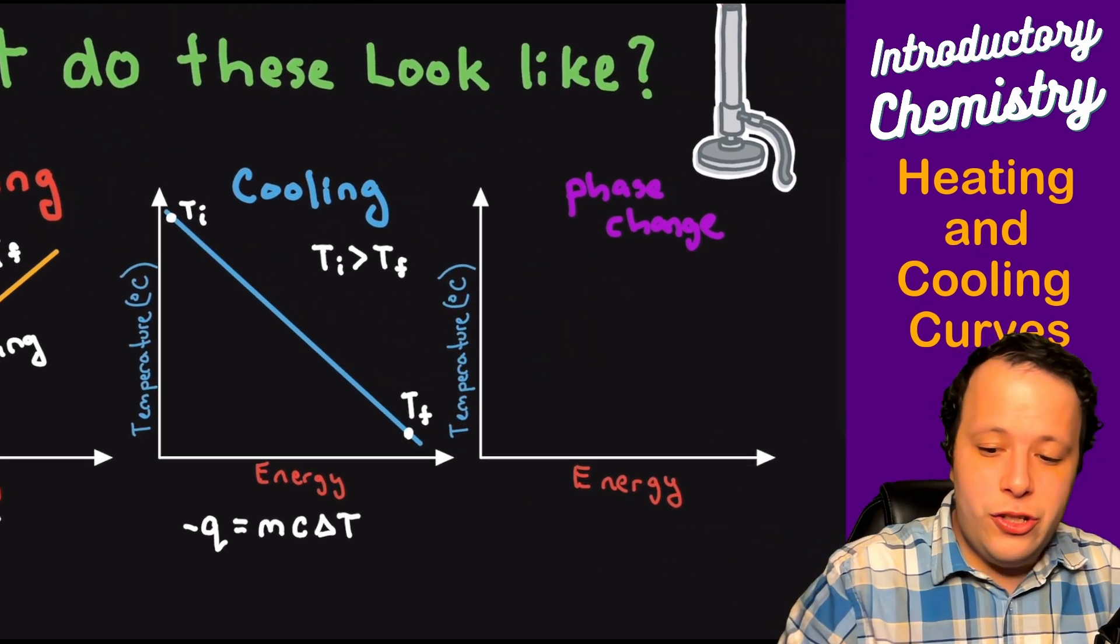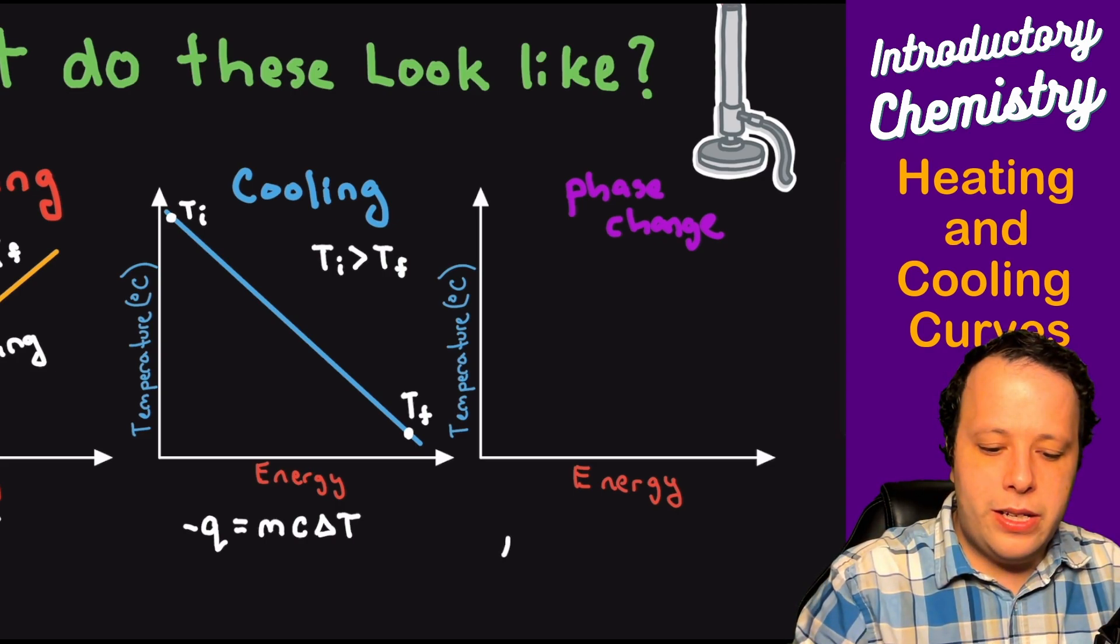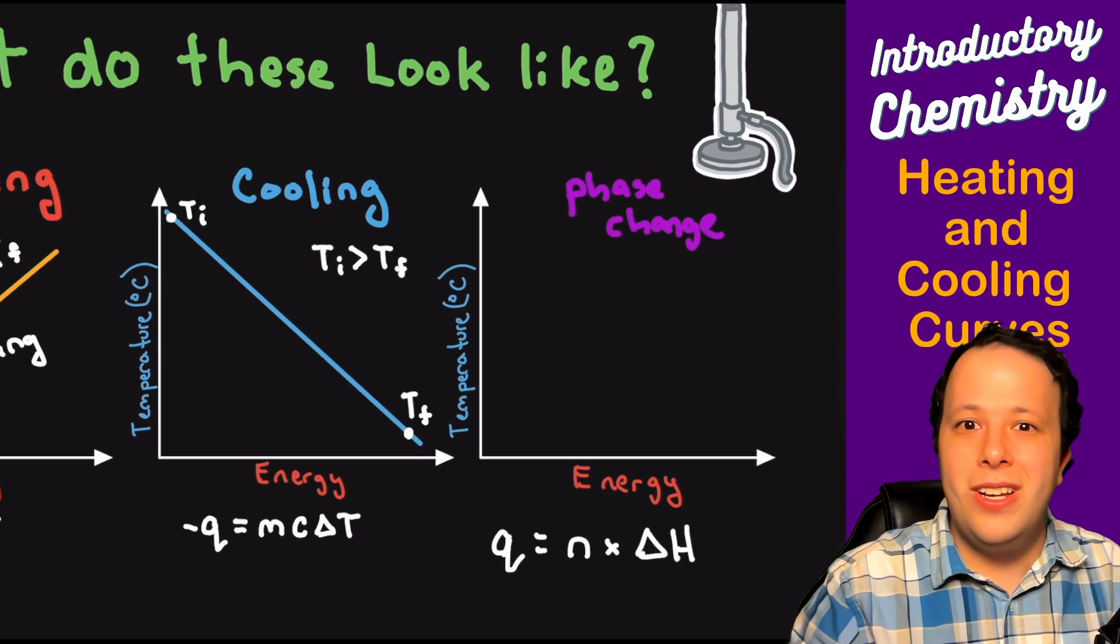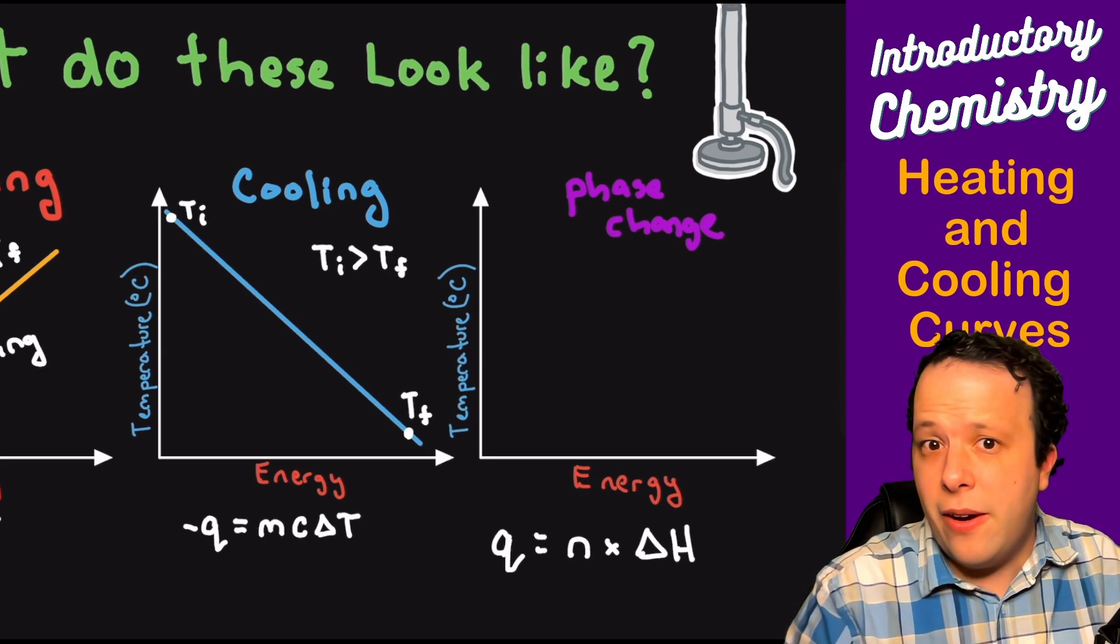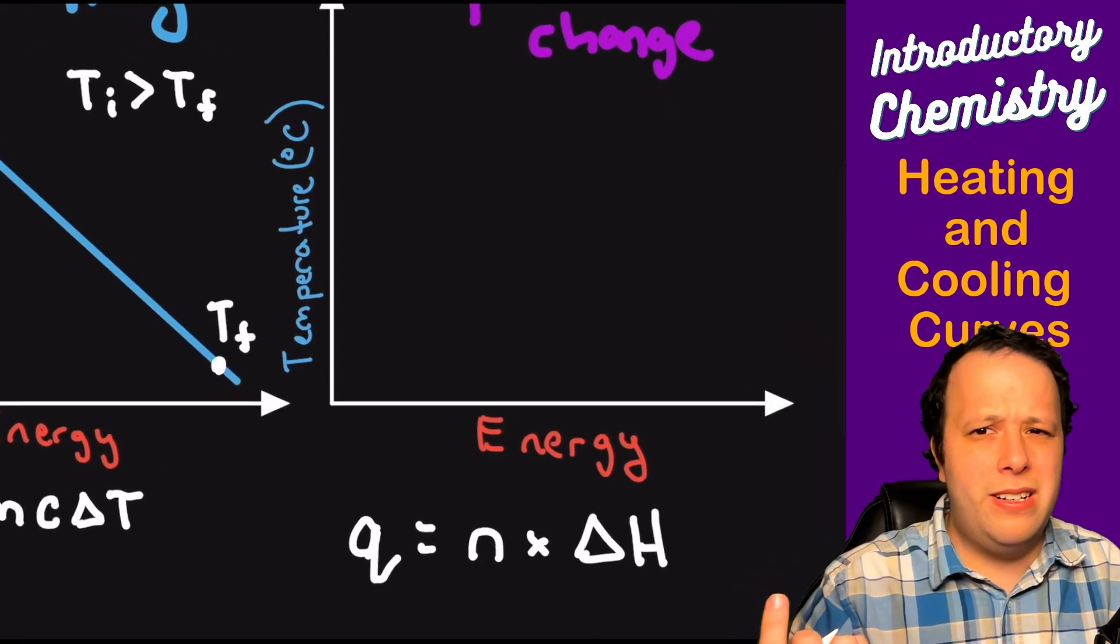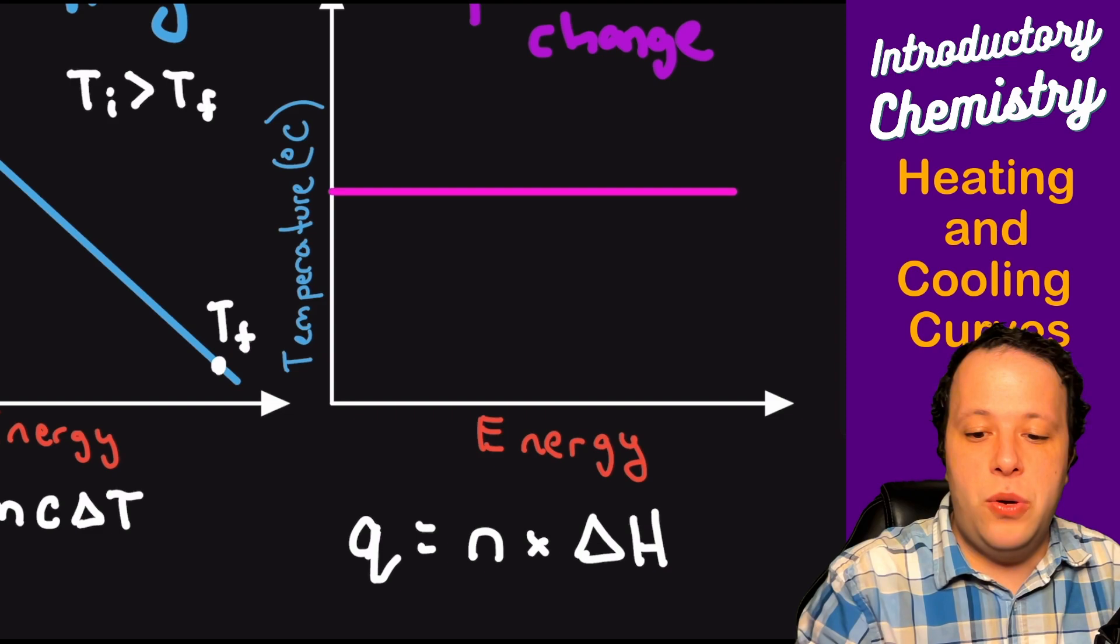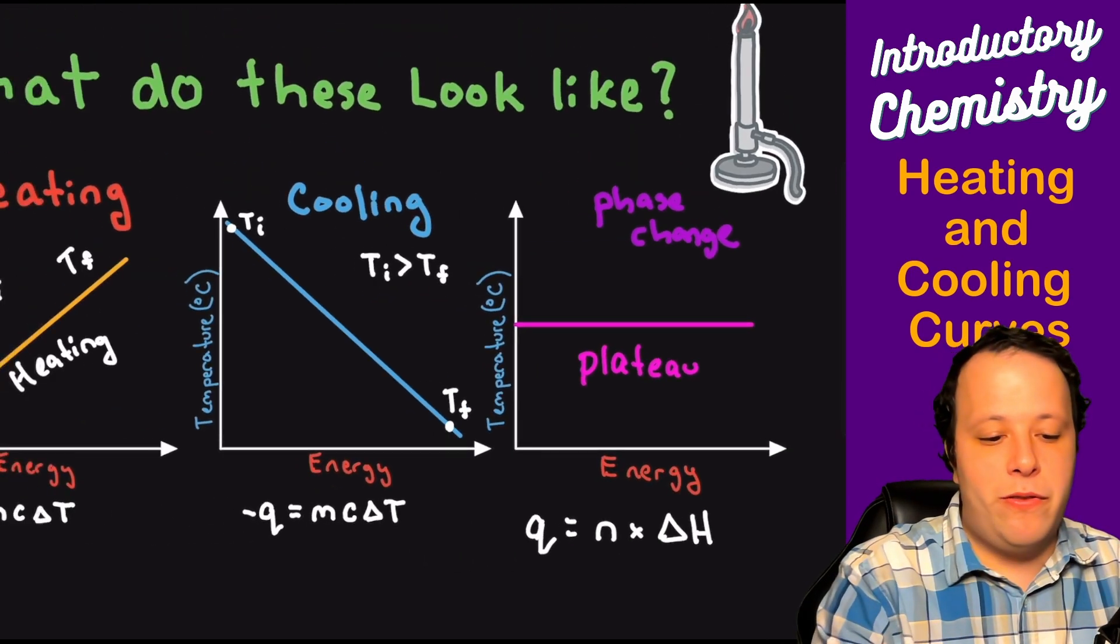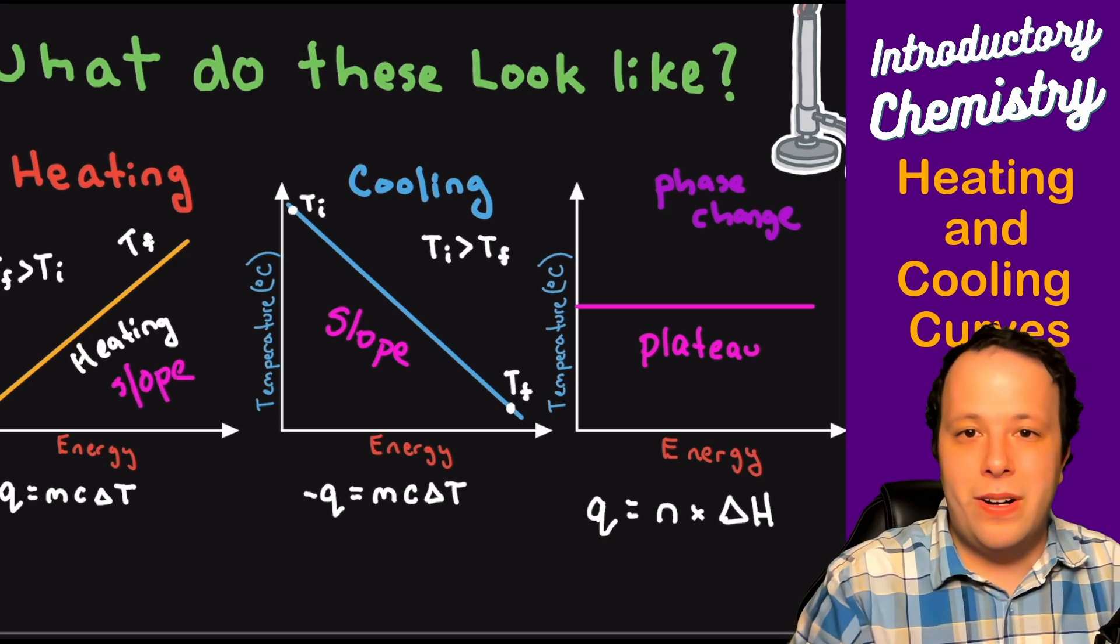Now when you have a phase change to represent this, well if you can remember the equations for those, usually we use Q is equal to n times delta H of either the fusion or vaporization. So there is no delta T value or temperature in that calculation at all. So if you think of this plot, well it's only temperature and energy, so if temperature is not changing how should you plot it? In this case what we would end up doing is we would show a plateau or a flat line, a plateau versus a slope for the other value. So slopes for the cooling and heating curves and a plateau for phase change.